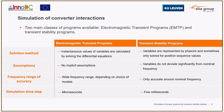Models in EMTP do not necessarily have any implicit assumptions and can be quite detailed, leading to a more accurate representation of the system over a wide frequency range. On the other hand, in transient stability programs it is assumed that oscillations are restricted to the low frequency spectrum, allowing for more simplified models but also restricting the frequency range of accuracy.